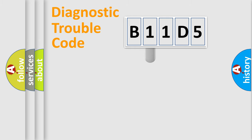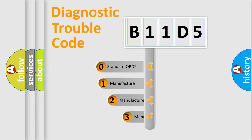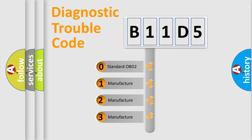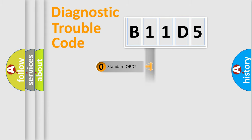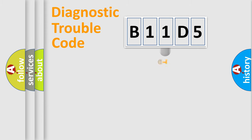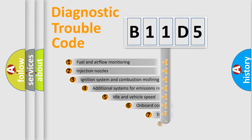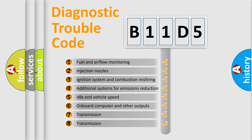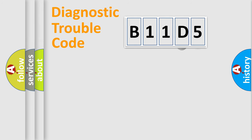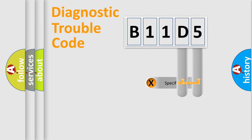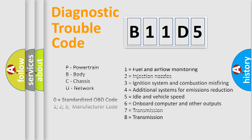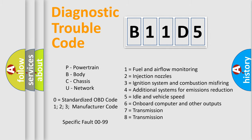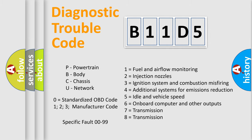This distribution is defined in the first character of the code. If the second character is expressed as zero, it is a standardized error. In the case of numbers 1, 2, or 3, it is a more manufacturer-specific expression of the car error. The third character specifies a subset of errors. The distribution shown is valid only for the standardized DTC code. Only the last two characters define the specific fault of the group. Such a division is valid only if the second character is expressed by the number zero.